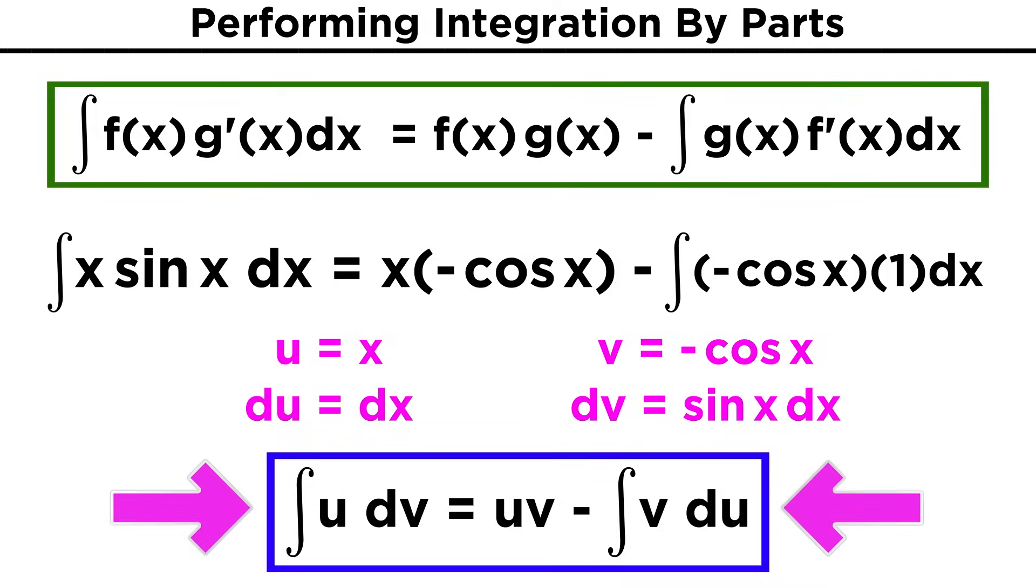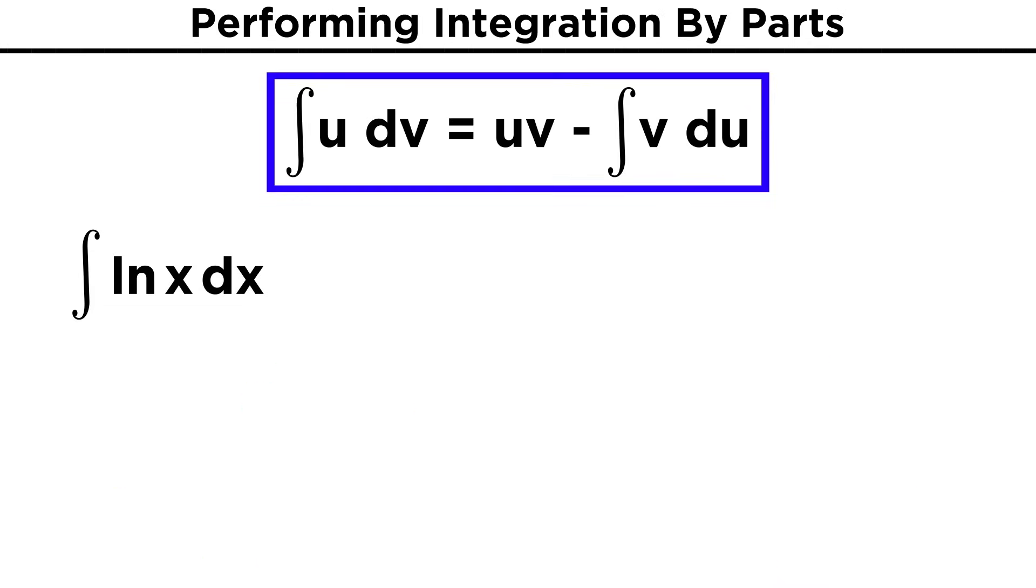Let's try another and you'll see what I mean. Say we want to integrate the natural log of x dx. This is not a common integral, and it also doesn't appear to be a product, but let's see how we actually can integrate by parts. We have to assign u and dv first, and here there is only one option, as there is only one function. Natural log of x will become u, and dx will become dv.